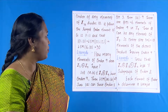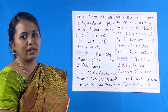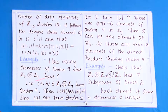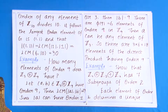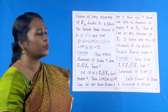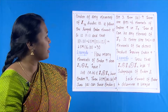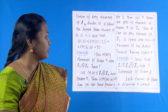Let us see one more example. How many elements of order 9 does Z₃ × Z₉ have? Let (a, b) belong to Z₃ × Z₉ and have order 9. Then LCM(order of a, order of b) = 9. Since the order of a can be 1 or 3, the order of b must be 9. There are φ(9) = 6 elements of order 9 in Z₉, and a can be any element of Z₃, so there are 3 × 6 = 18 elements of order 9 in the direct product.